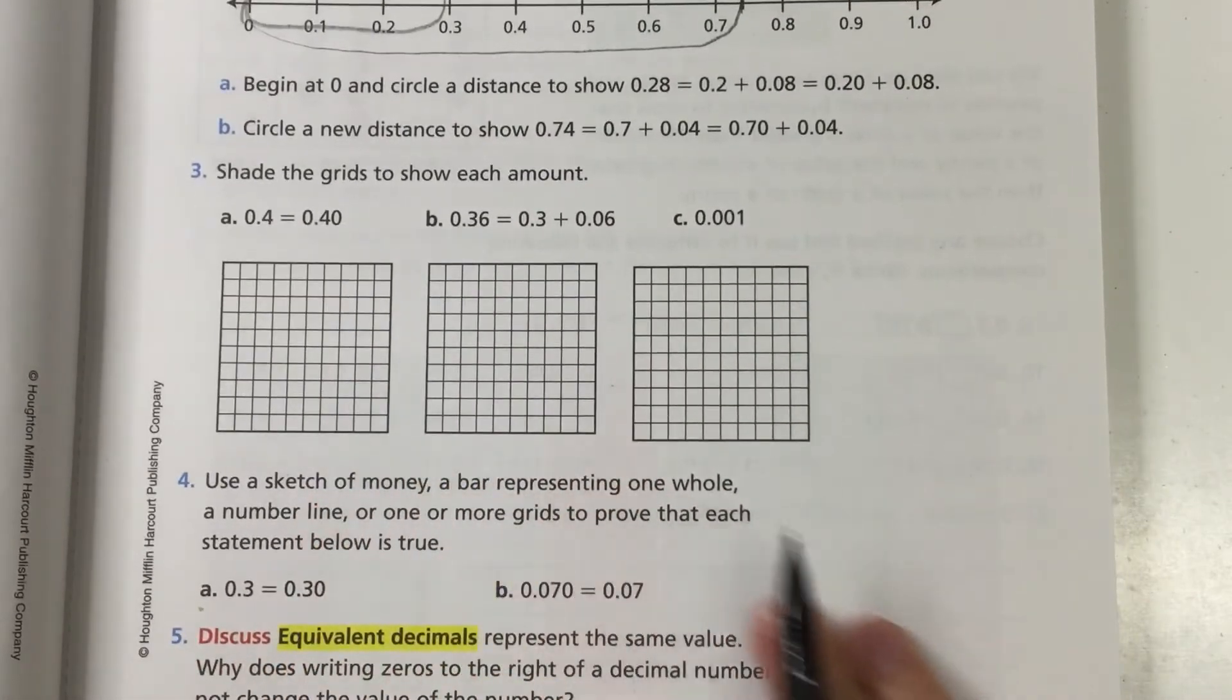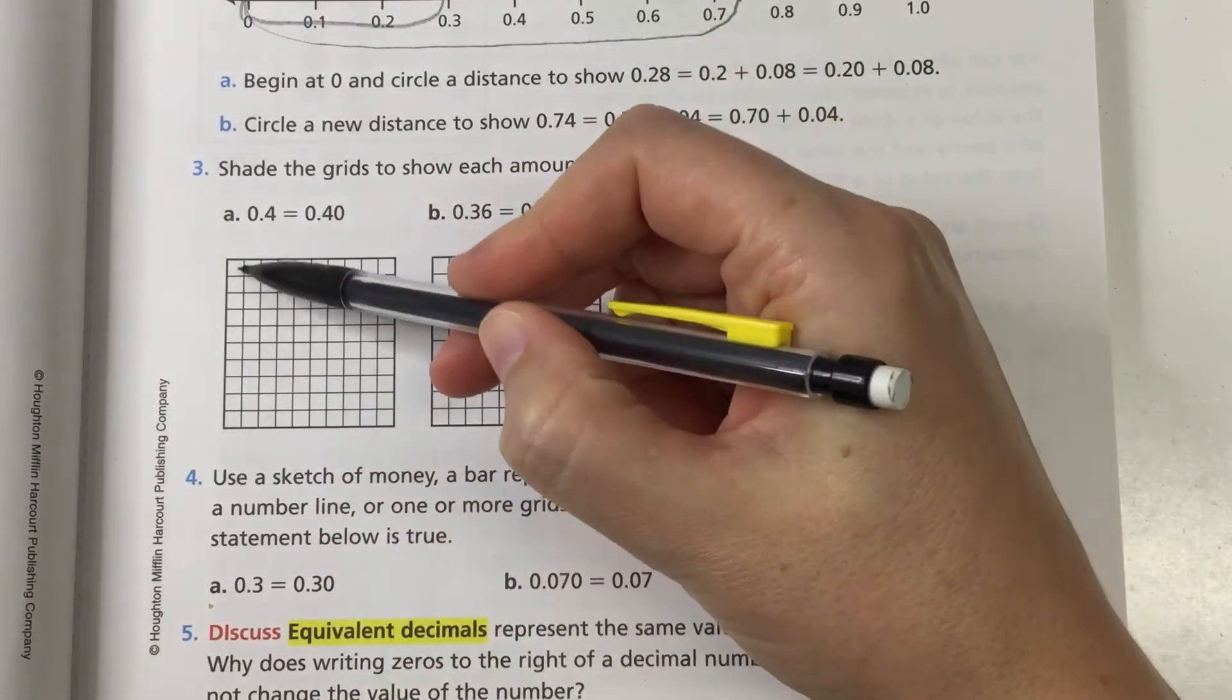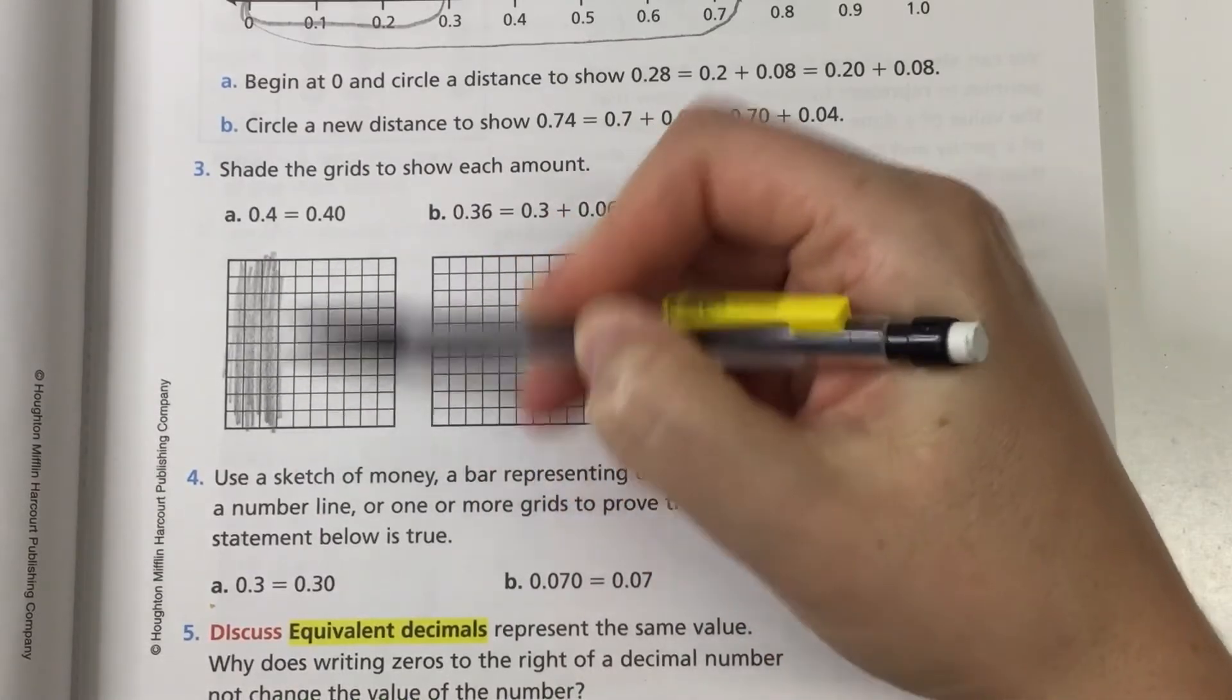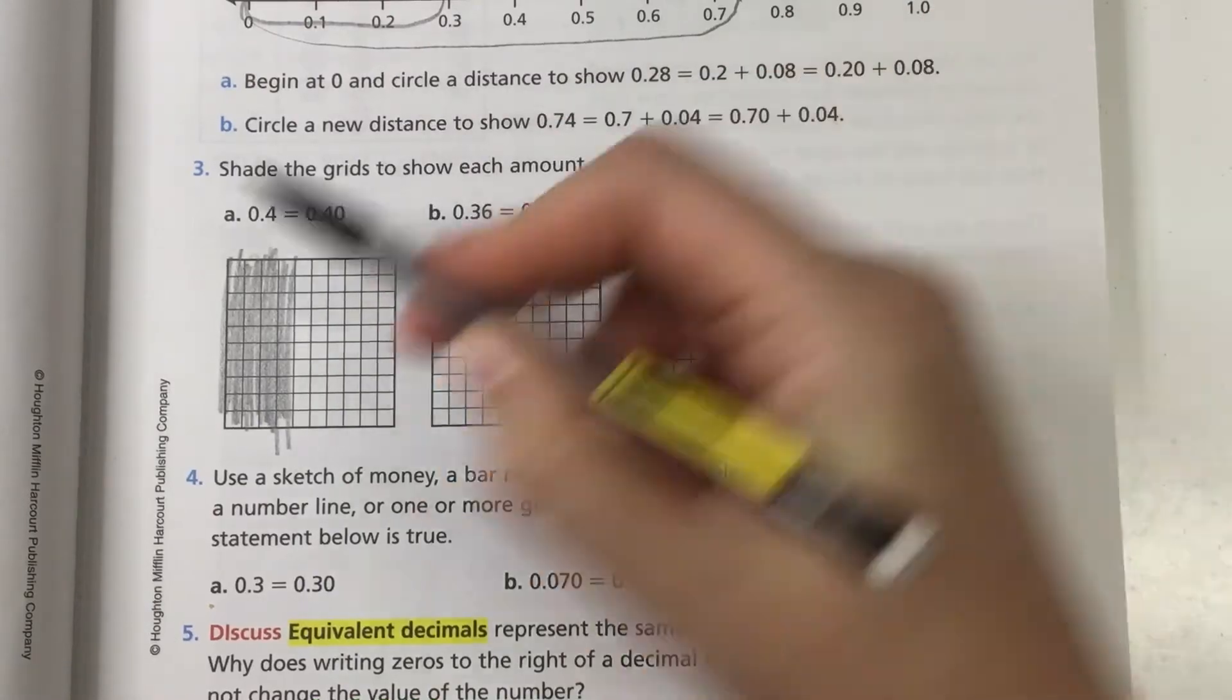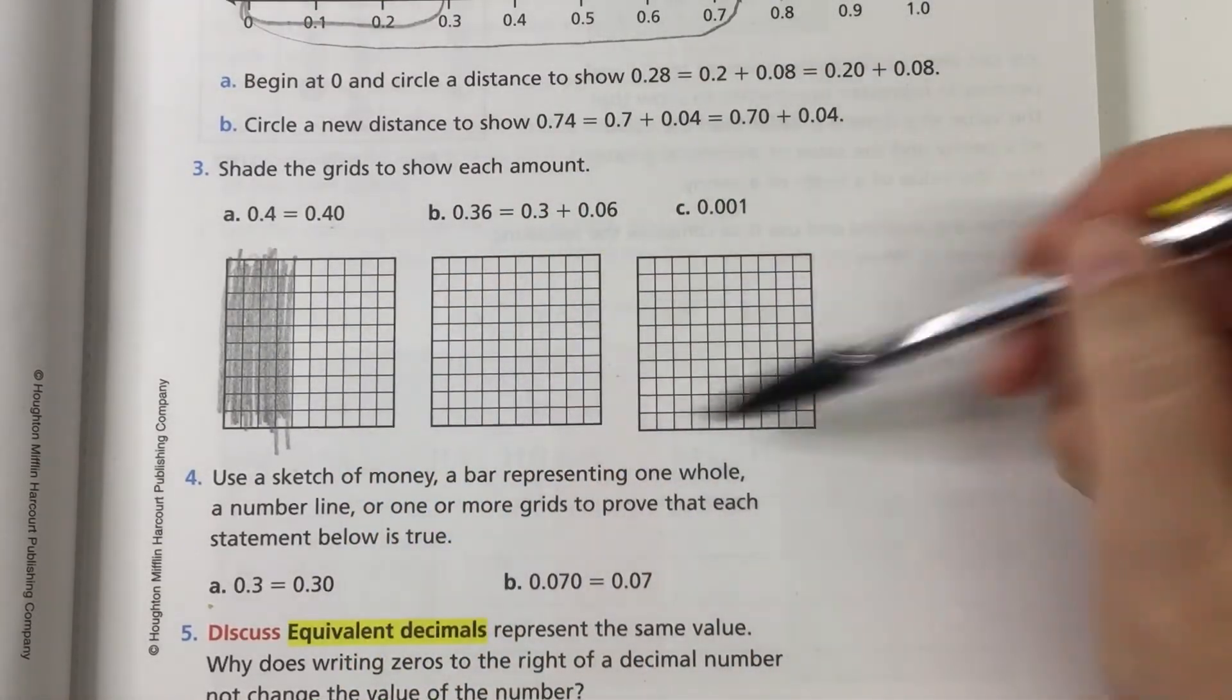Okay so I'm showing them I'm just showing the distance with circles that time. Then here we're shading the grids to show each amount. So here we have four tenths. So I've got four columns there right and then that's the same thing as 40 hundredths. 1, 2, 3, 4, 5, 6, 7, 8, all the way up to 40. So you can finish the rest.